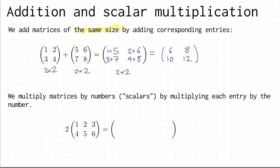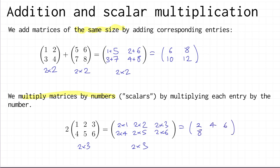We also do scalar multiplication, which is when we multiply a matrix by a number — we call that number a scalar. All we do is multiply each entry in the matrix by the scalar. For example, multiplying 2 by the two by three matrix [[1,2,3],[4,5,6]] gives [[2,4,6],[8,10,12]].